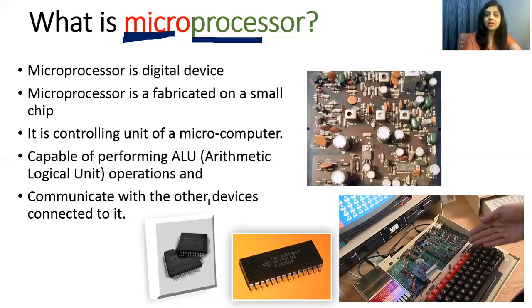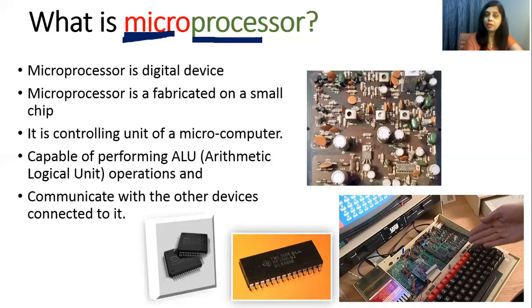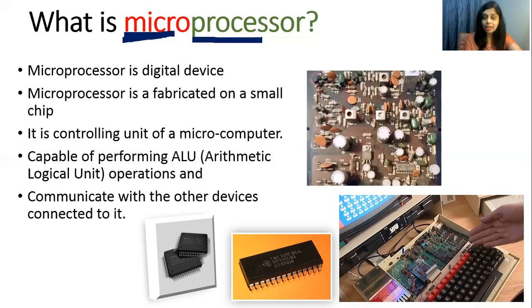Microprocessor communicates with other devices connected to it. For example, in a laptop there is a keyboard and a monitor. When you press 'A,' it does not go directly from keyboard to monitor — it first goes from the keyboard to the processor, and then from the processor to the monitor. So the processor helps facilitate this communication.